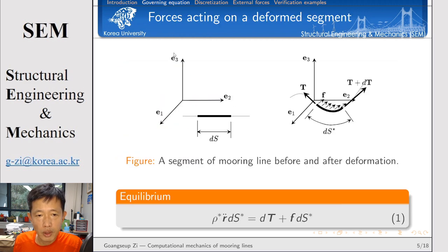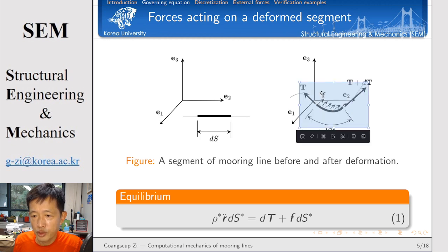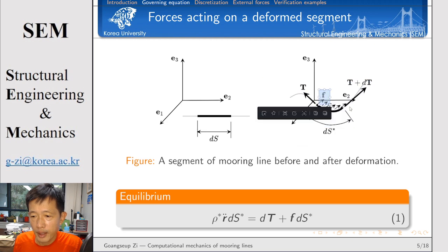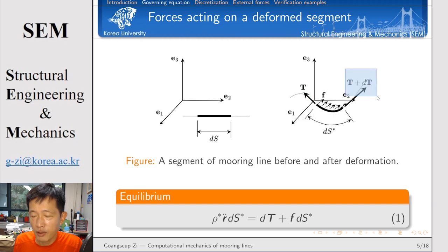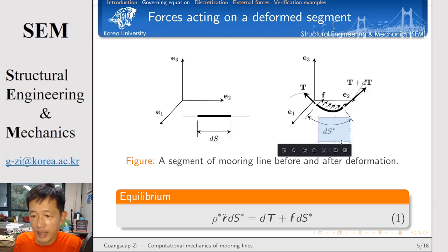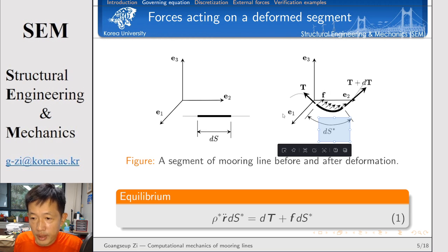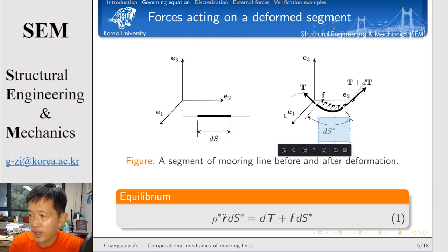Now let's talk about the governing equation. To build the governing equation, we need to consider the forces acting on the deformed segment. The deformed segment is subjected to the distributed force F. At the two ends, we must have internal forces t-vector, and then the internal force must change to t plus dt by the length change ds*. Here ds* stands for the length of the segment after deformation. e1, e2, e3 stand for the Cartesian coordinates. The vertical direction is positive in e3 and the gravity direction is minus e3.